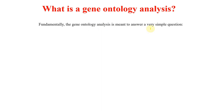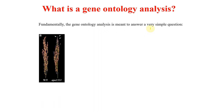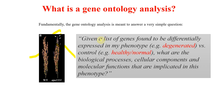The gene ontology analysis is meant to answer a very simple question. To understand more, let's take this example. You can see there are two panicles — one panicle is normal and one panicle has a degenerated apical tip. The gene ontology analysis will help us know which genes are being up-regulated and down-regulated and what they are coding for. Given a list of genes found to be differentially expressed in a phenotype, we compare the degenerated phenotype versus the control, and gene ontology analysis reveals the biological processes, cellular components, and molecular functions implicated in that phenotype.